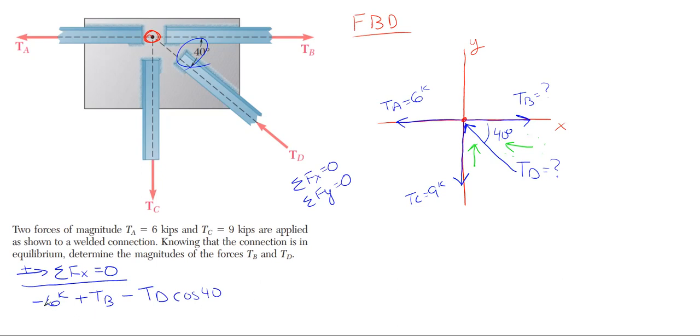So what we have here is minus 6 plus TB minus TD cosine of 40, equal to zero. Can we really solve for anything here? No, we can't solve because we have one equation and two unknowns. Anytime this happens where you have two unknowns with one equation, you don't just give up. You just go to your other one. So let's use the Y and see if we can solve for anything there. We're going to take up as positive.